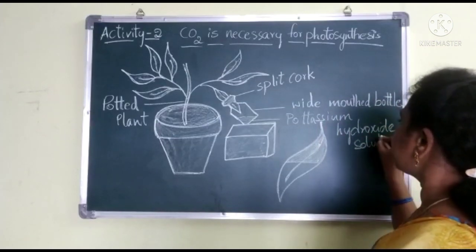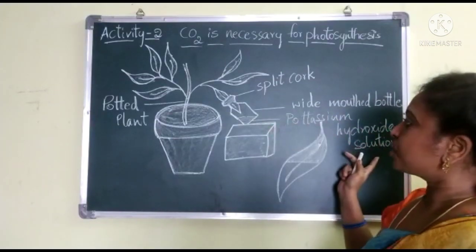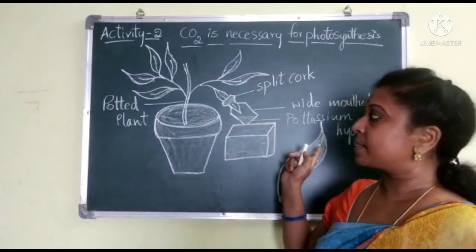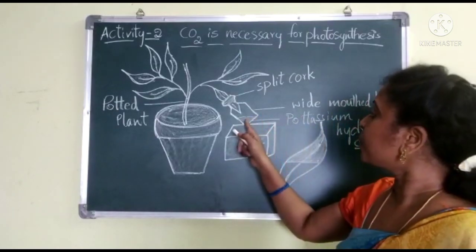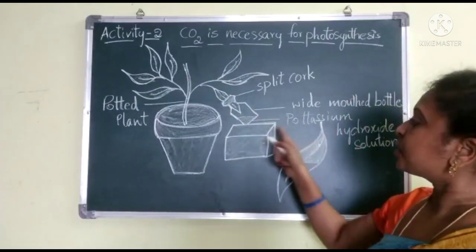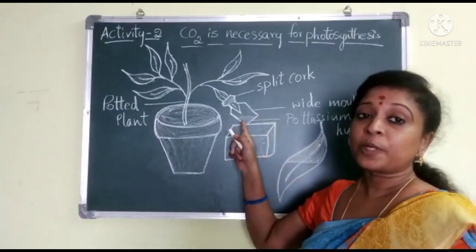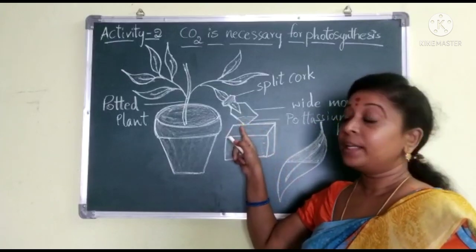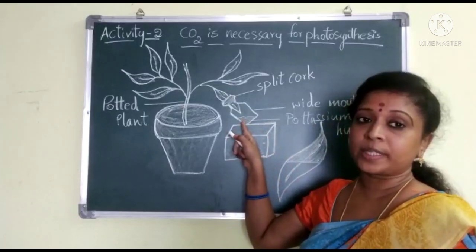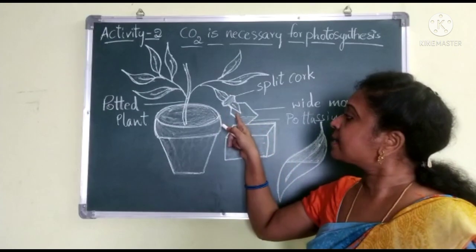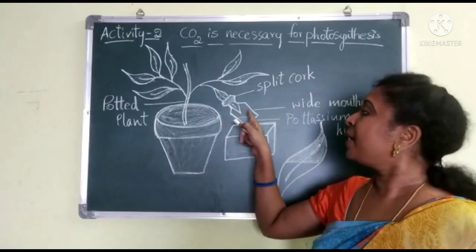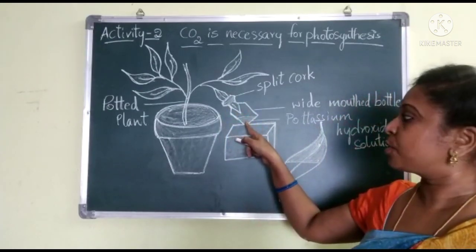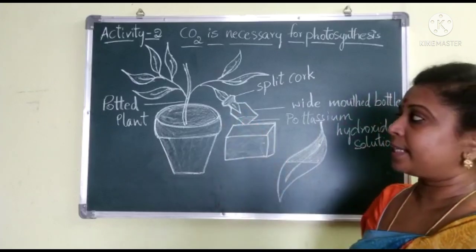We can use potassium hydroxide solution or potassium hydroxide pellets. Why are we using potassium hydroxide? Because potassium hydroxide solution has the ability to absorb carbon dioxide. Whatever carbon dioxide enters this bottle will be absorbed by the potassium hydroxide solution kept inside the bottle.